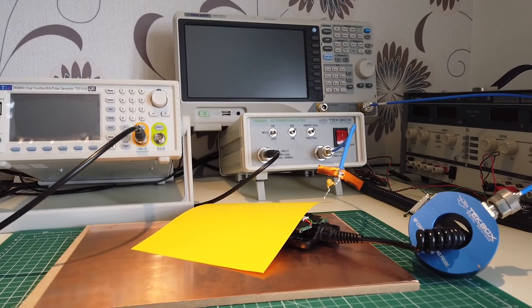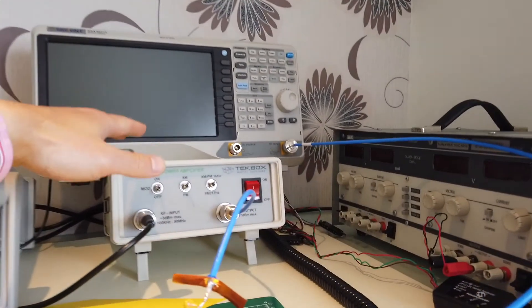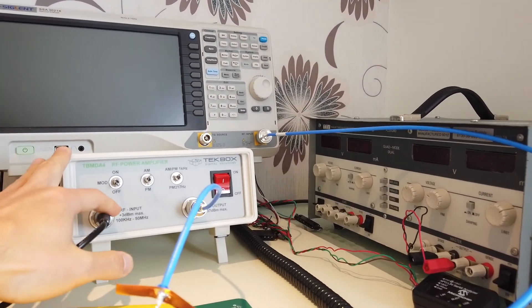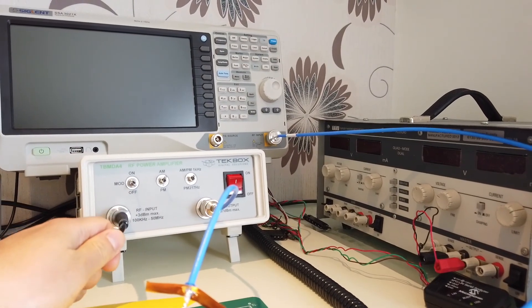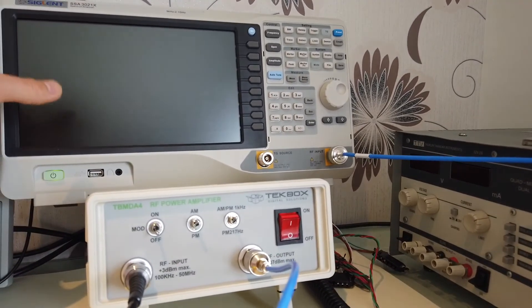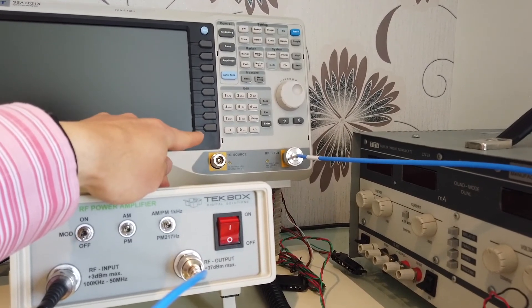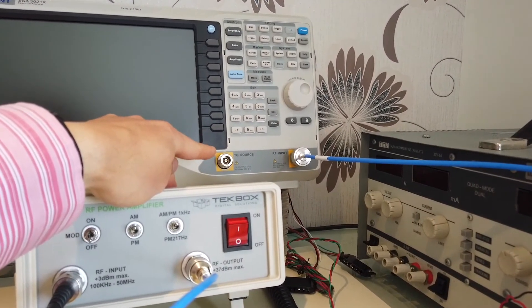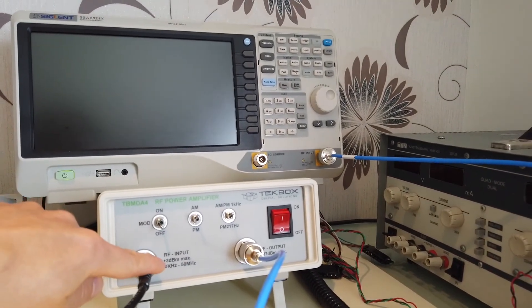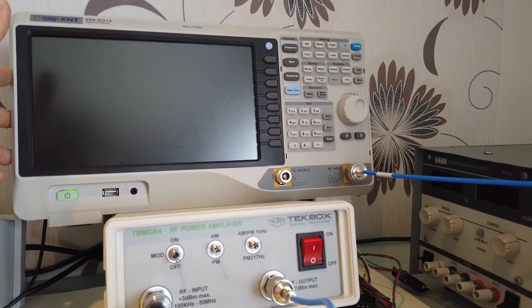One final note of the test setup is the power amplifier has a maximum input power rating of 3 dBm. We mentioned it before. This power amplifier works best with the spectrum analyzer tracking generator output. Because the tracking generator of a spectrum analyzer often has an output range of minus 20 dBm to 0 dBm, which will never exceed the limit here.